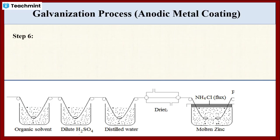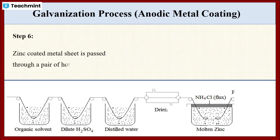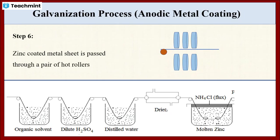In the last step, the zinc-coated metal sheet is passed through a pair of hot rollers. This removes the excess zinc content and produces a thin film of uniform thickness. Finally, this zinc-coated metal sheet is cooled down.